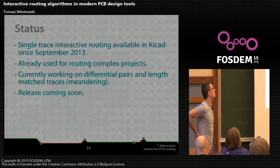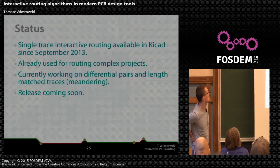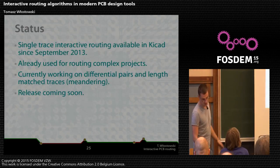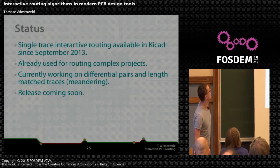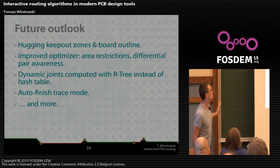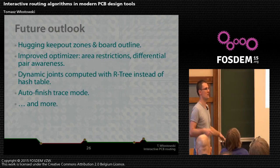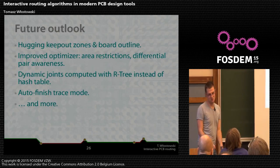Status: the single-trace interactive router has been available in KiCad since September 2013 and is already used for routing pretty complex projects. We are currently working on differential pairs and length matching — the release of diff pairs is coming very soon. For the future, we want to support copper zones and board outline, improve the optimizer, change how connectivity is resolved, and add an auto-route single track mode where you just press finish and it completes the trace in simple cases.